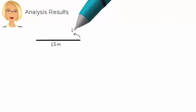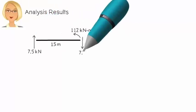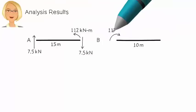Here is the summary of our analysis. These are the member forces and support reactions due to a support settlement of 50 millimeters at B.